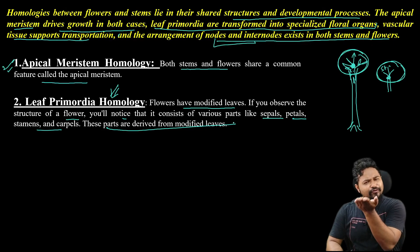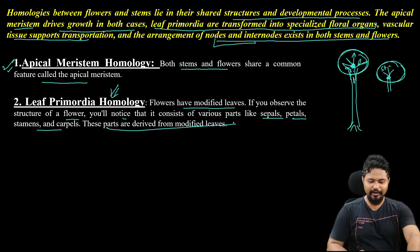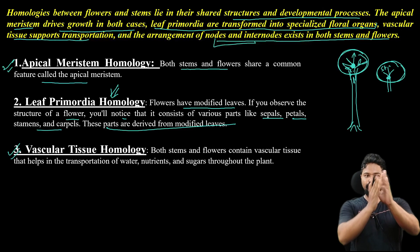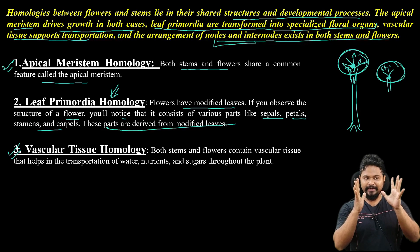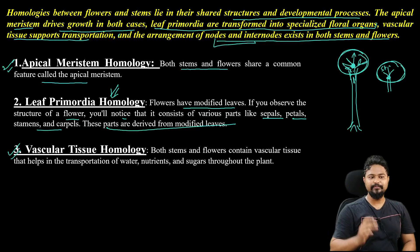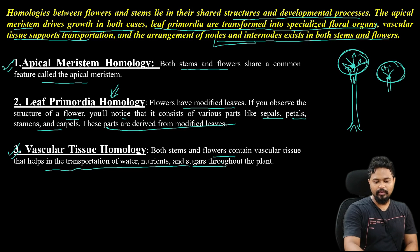Third: vascular tissue homology. The stem has a vascular system, and the flower also has this vascular system. Both stems and flowers contain vascular tissue that helps in the transportation of water, nutrients, and sugar throughout the plant.